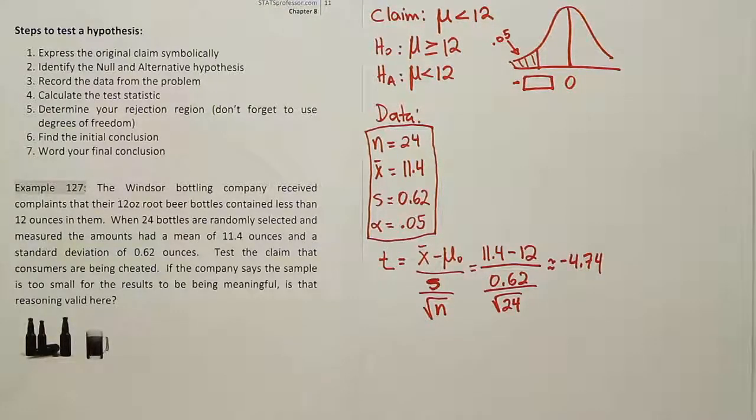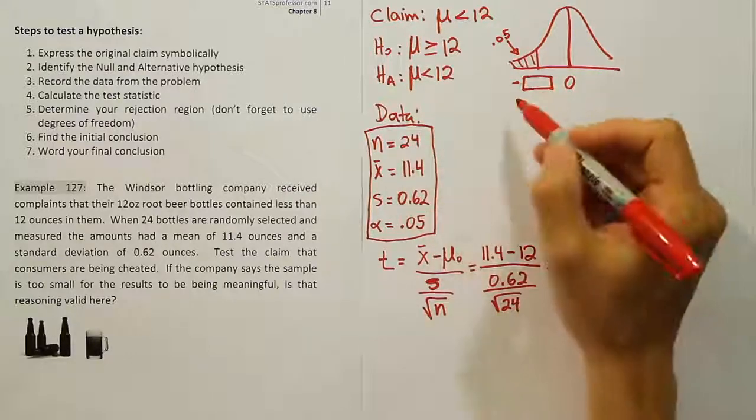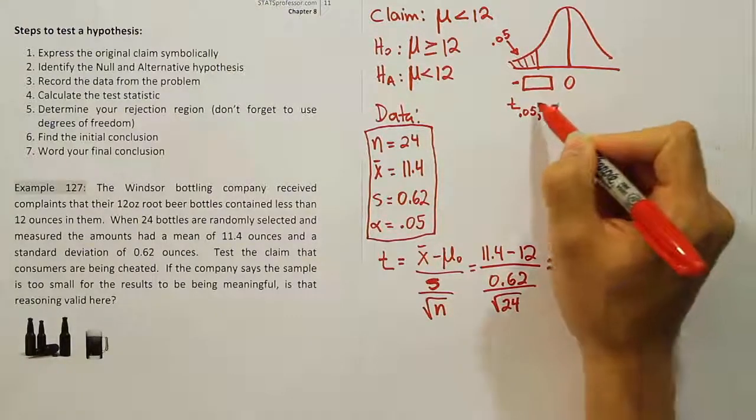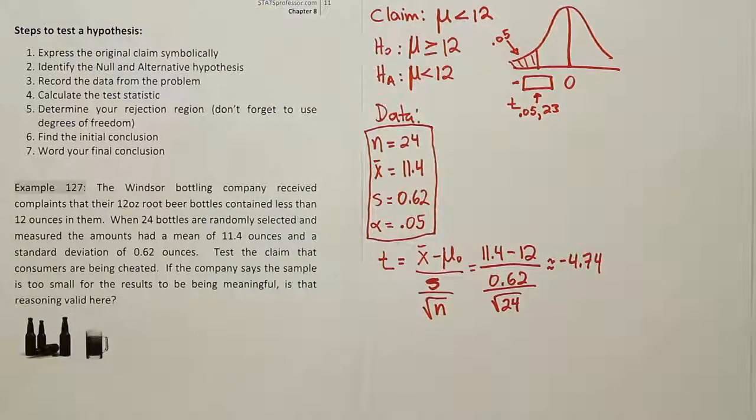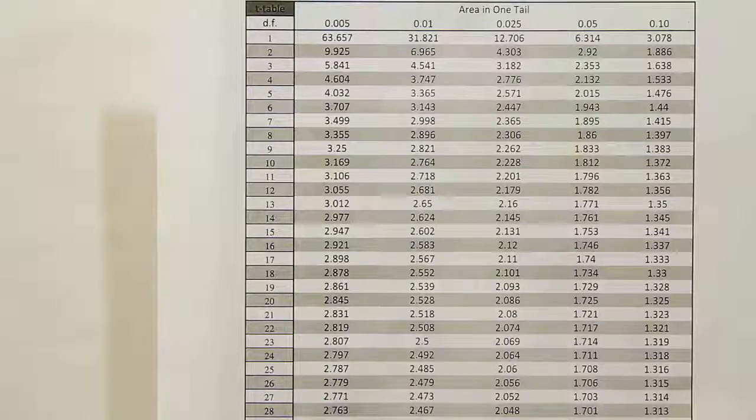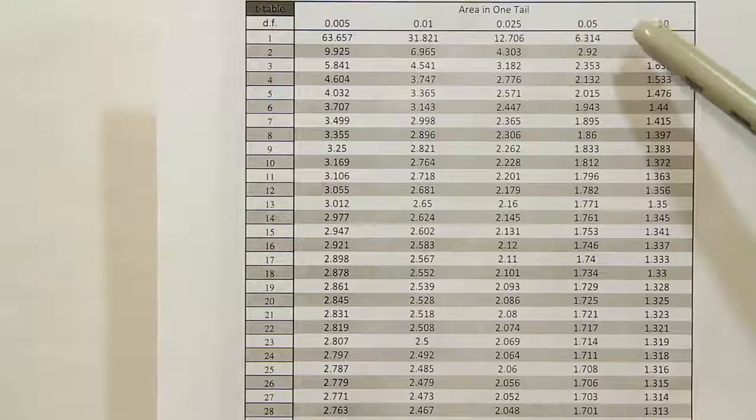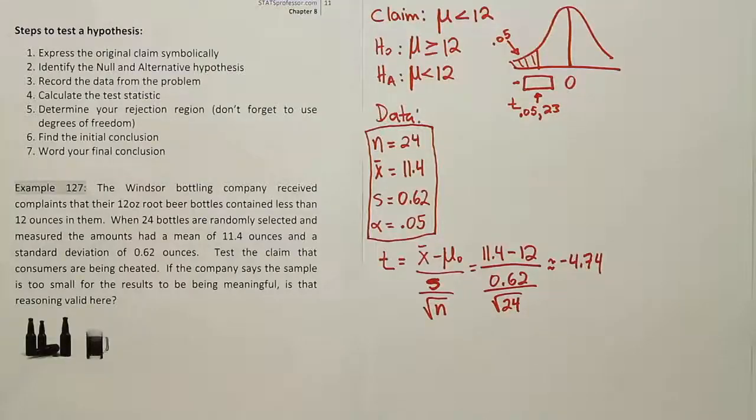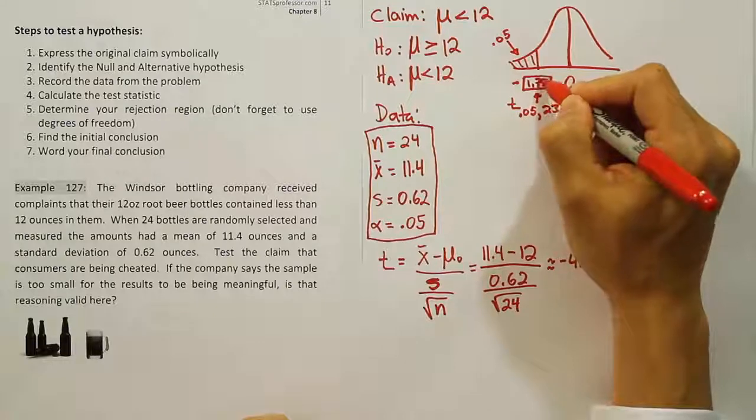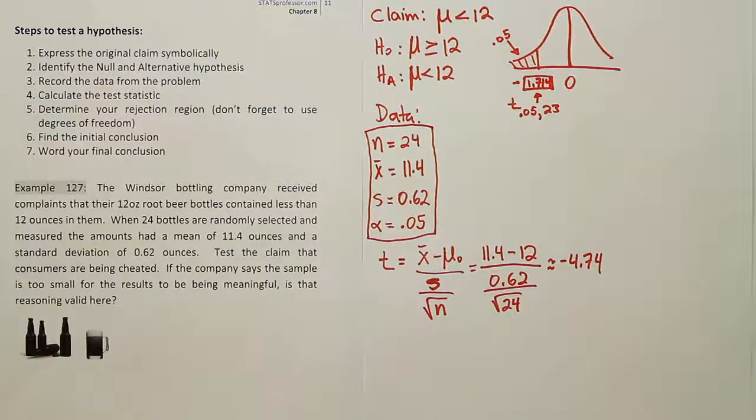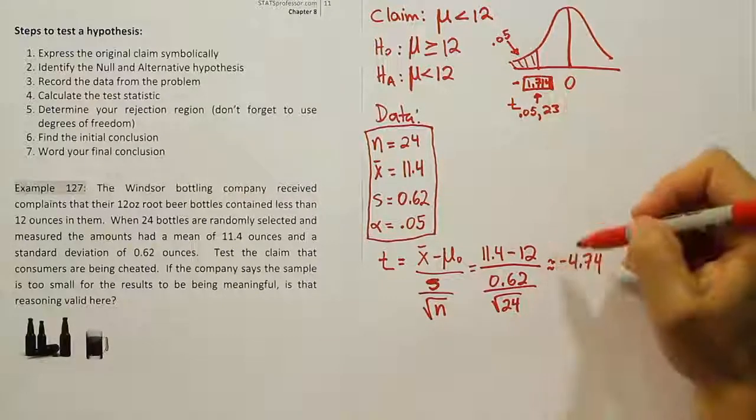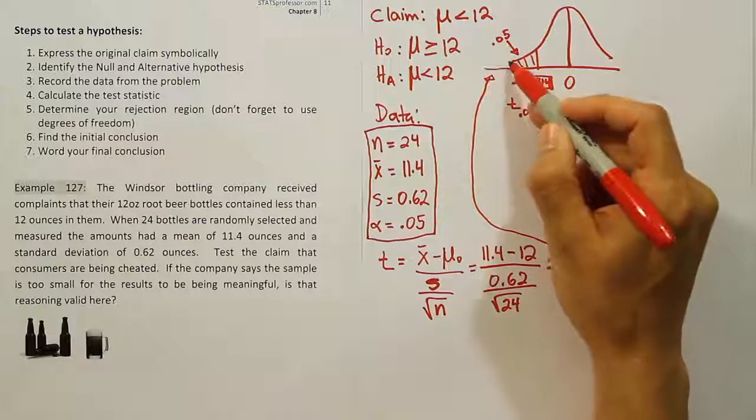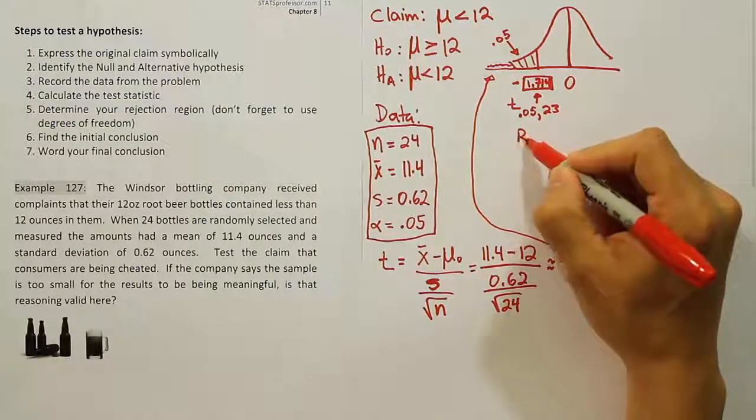Let's go see what we get when we look that up on our t-table. We're going to look up 0.05 with, don't forget the degrees of freedom here, 23 degrees of freedom. This is t₀.₀₅ comma 23 degrees of freedom. So we're looking at 0.05 in one tail. And we want to go down to degrees of freedom 23. And when we do that, we find the answer 1.714. So the critical value is 1.714 and a test stat of negative 4.74, this is clearly over here in the rejection region. And because it's in the rejection region, we're going to conclude that we should reject the null.